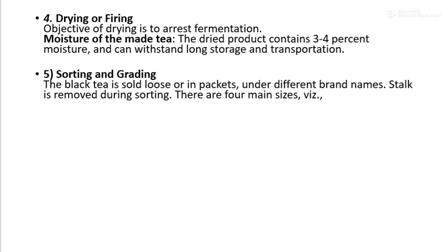Sorting and grading: black tea is sold loose or in packets under different brand names. Stalks are removed during sorting. There are 4 main size gradings according to different sizes, such as dust, pekoe dust, powder, and fine powder.